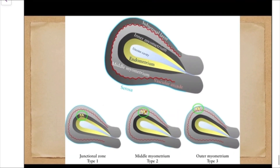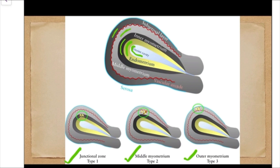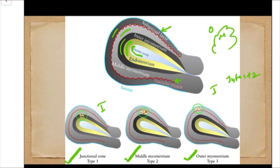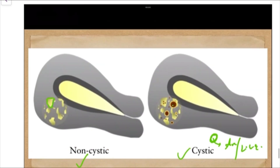Regarding layer involvement: if only the junctional zone is involved, it is Type 1; the middle myometrium is Type 2; the outer myometrium is Type 3. To identify layers: the uterine cavity, endometrium, inner myometrium or junctional zone, middle myometrium, outer or sub-serosal layer, and serosa. To differentiate the middle from outer myometrium on color Doppler, there is a vascular arcade between them. The adenomyosis lesion can involve multiple layers — e.g., junctional zone plus middle myometrium would be Type 1+2.